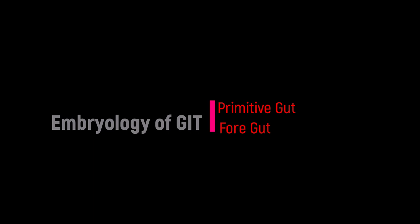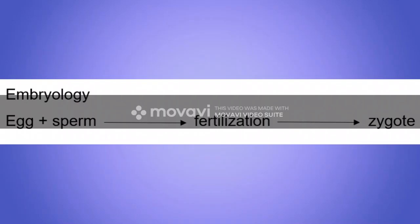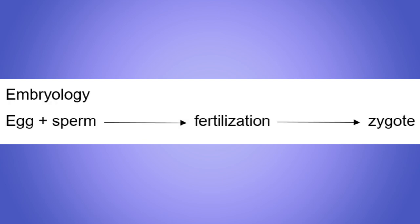Hello guys, today I will discuss the embryology of the digestive system. In embryology, we will first talk about fertilization. Basically, fertilization occurs when gametes fuse together — the egg and sperm. When the gametes fuse together, we get a zygote.